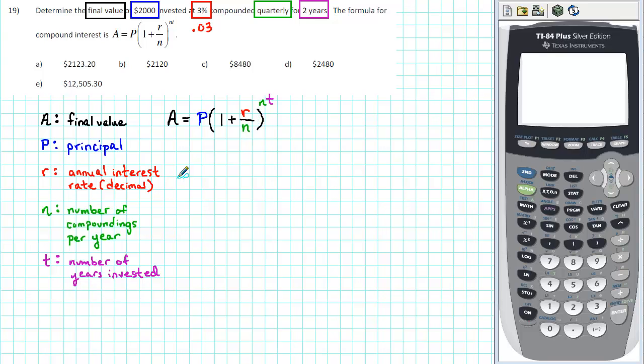The letter N corresponds with the number of compoundings per year. We are given that the principal is being compounded quarterly. That means that N is equal to 4.